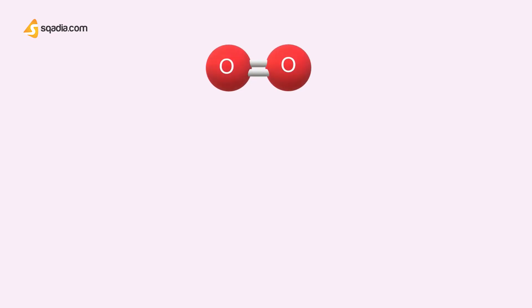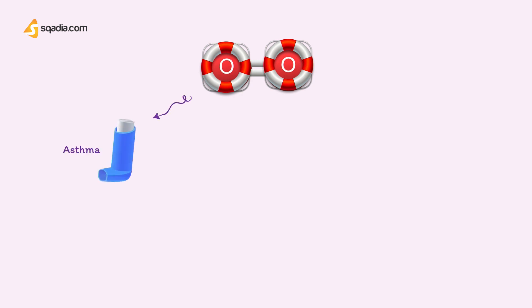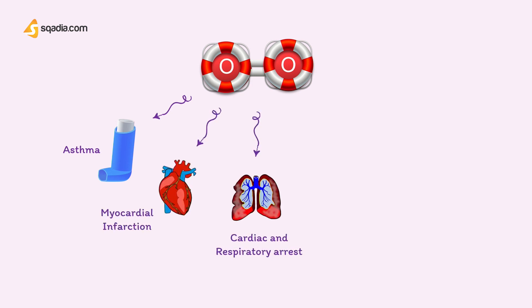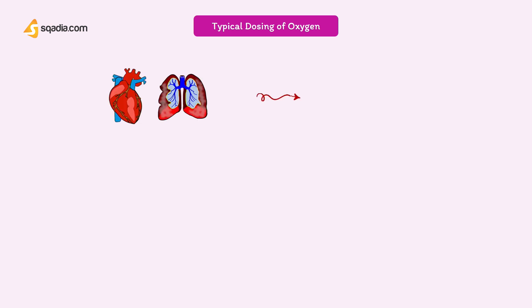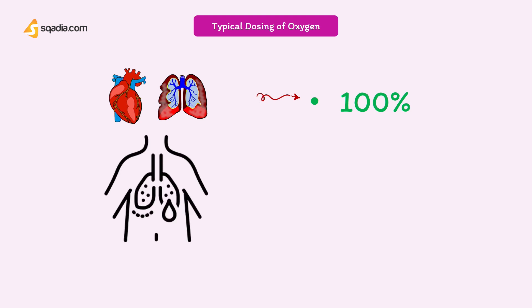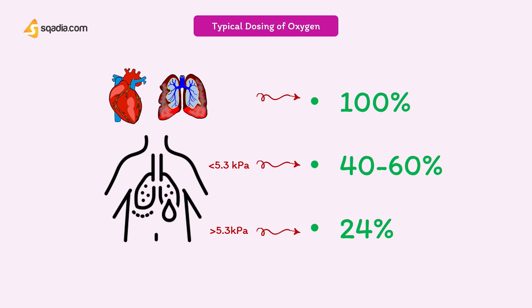Oxygen is used to provide life support by restoring tissue oxygen levels — for example in asthma, myocardial infarction, and sickle cell crisis. It is also used for the management of sudden cardiac or respiratory arrests, resuscitation of the critically ill, and for anesthesia. For typical dosing in acute conditions: cardiac or respiratory arrest requires 100%; hypoxemia with partial CO2 less than 5.3 kPa requires 40–60%; and hypoxemia with partial CO2 greater than 5.3 kPa requires initially 24%.